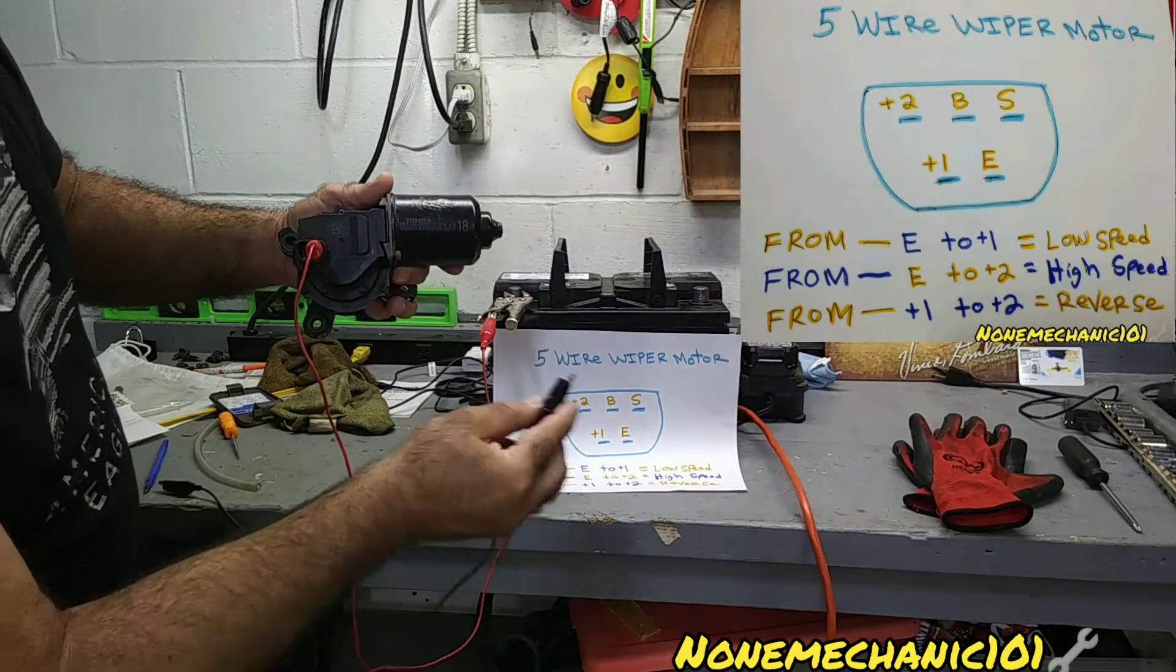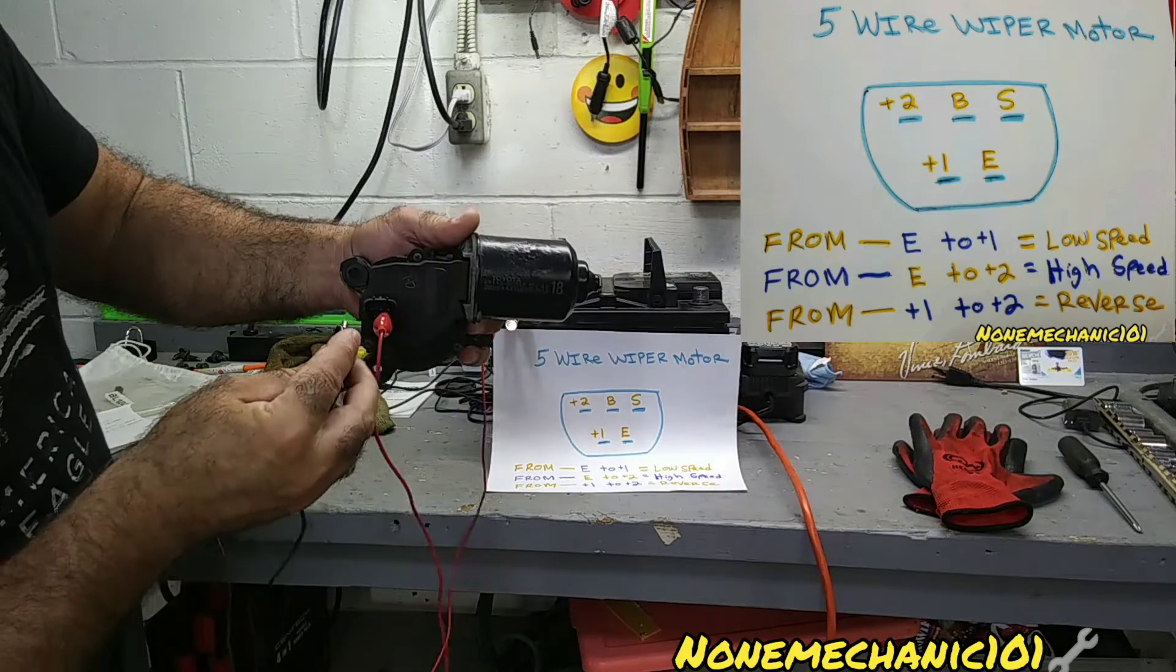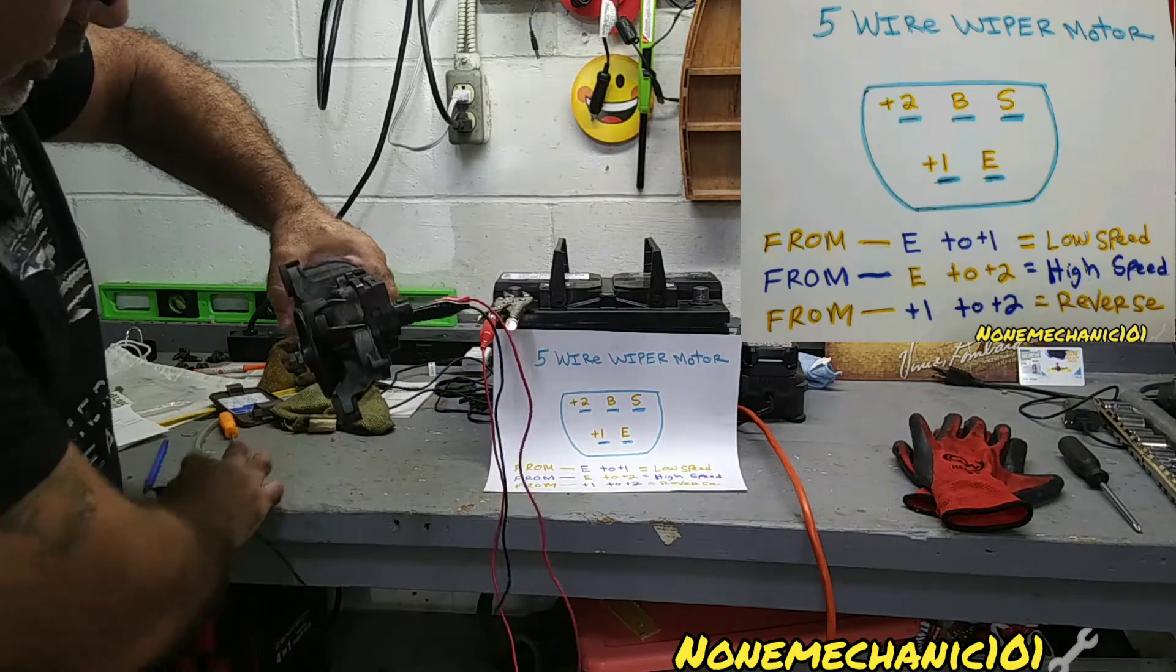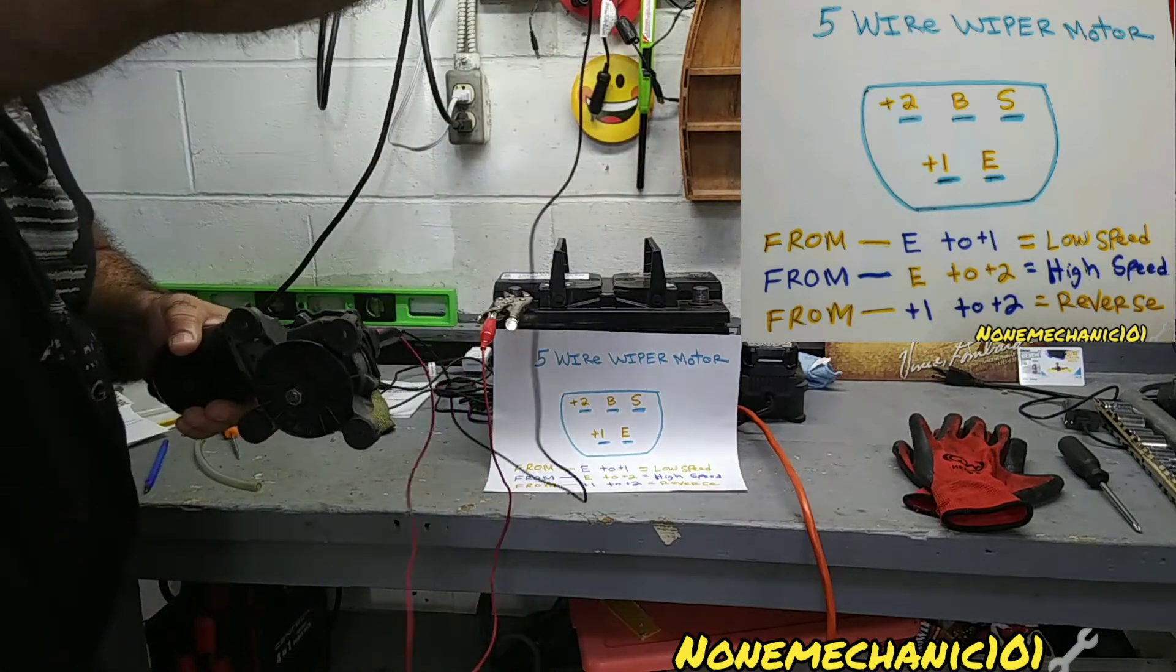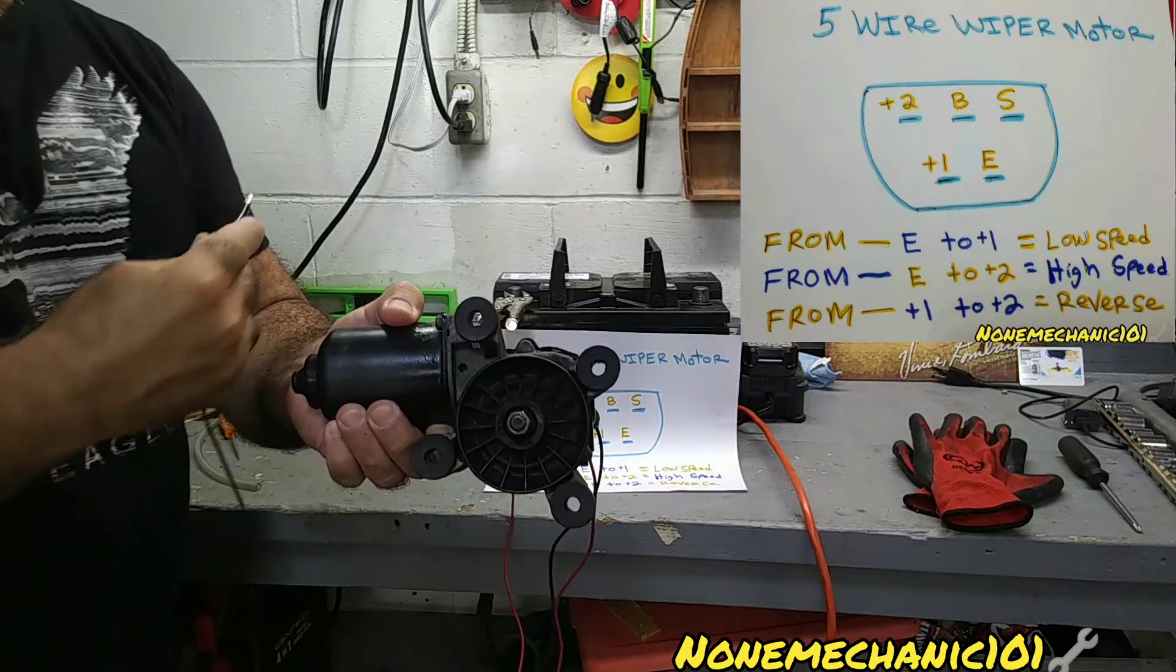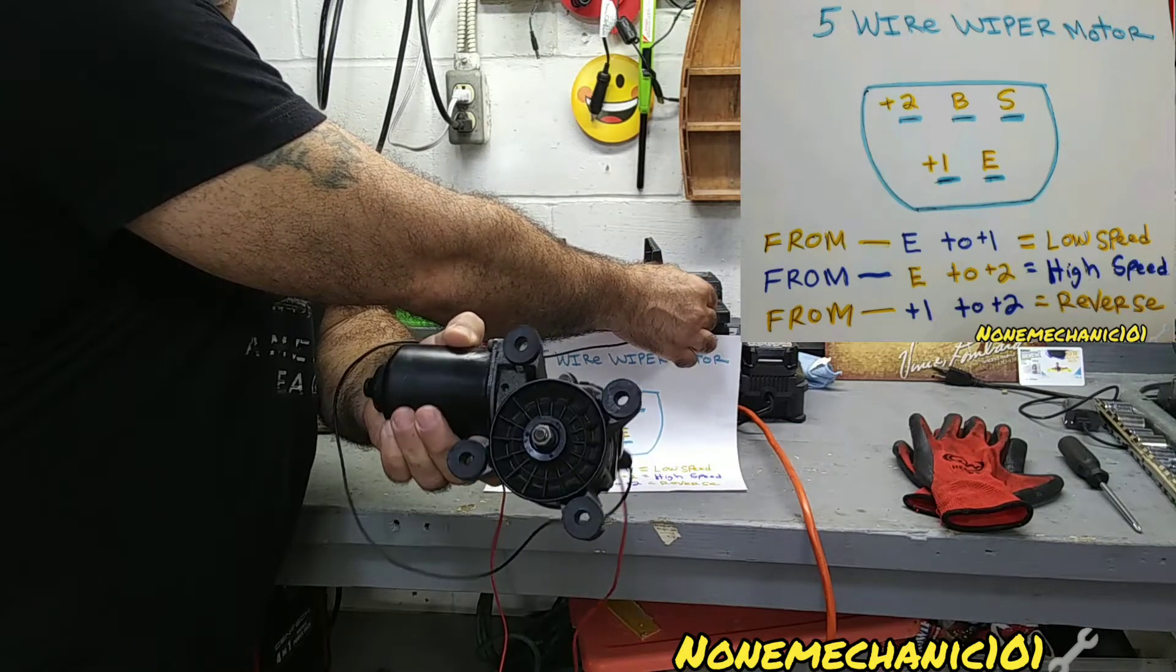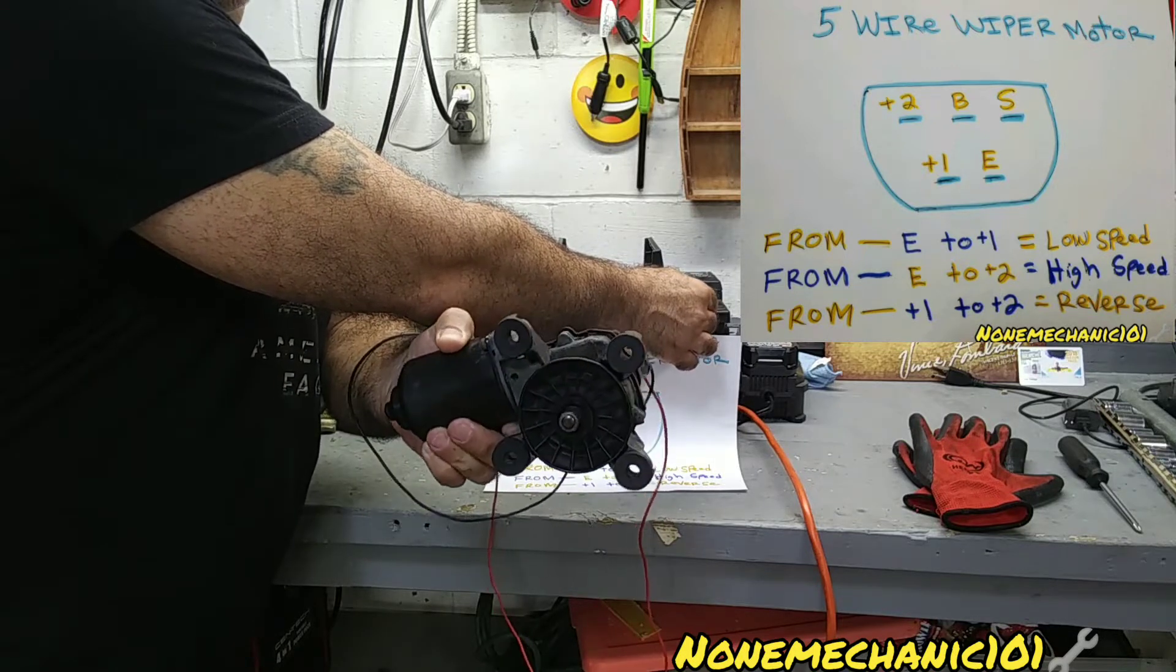So we're going to go right next to it, +1. That's the number that's in there, +1. Now that it's connected, we're going to take this cable and put it in the positive. And you're going to see this moving very slowly. That's the low speed. See it? So if you have problems with low speed, you check it. That's the way you're going to check it.